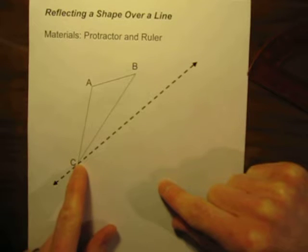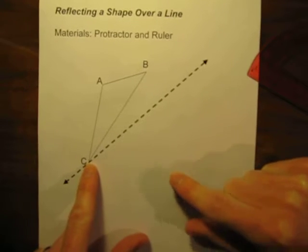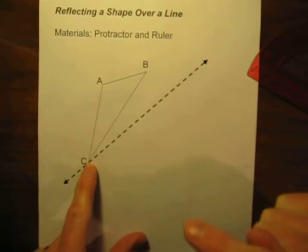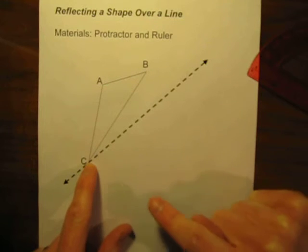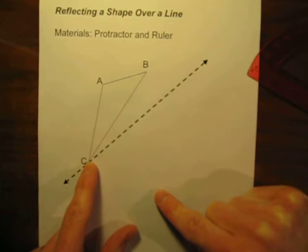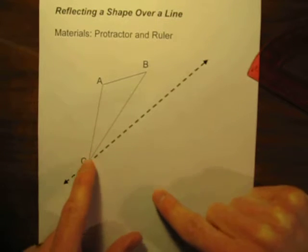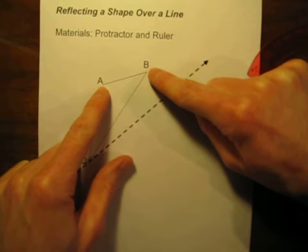Point C is located right on the reflection line. So anytime you have a point directly on the line of reflection, when you do the reflection, it's not going to move. So point C is going to be here before and after the reflection. It's points A and B that are going to move.